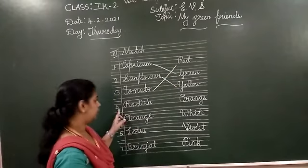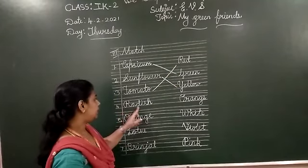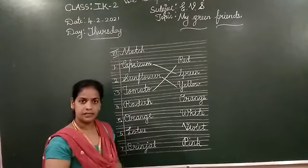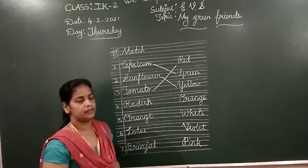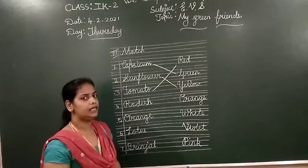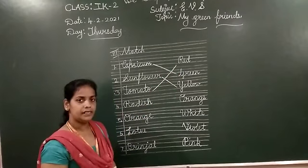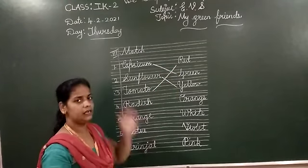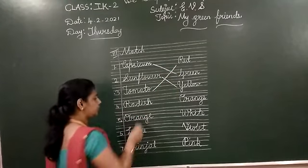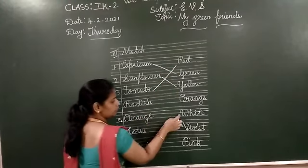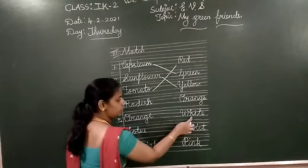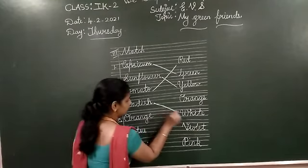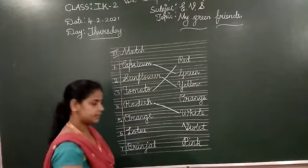Fourth one. R-A-D-I-S-H. Radish. Radish is a vegetable. So radish is in which color? Radish is white color. Correct? So match radish to white color. W-H-I-T-E. Radish, white color.